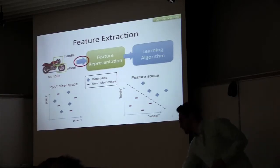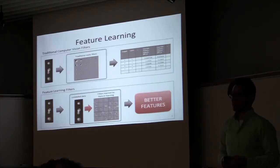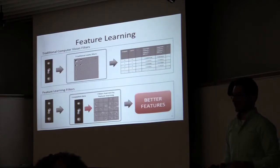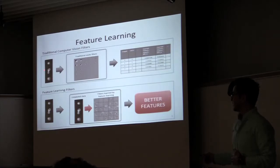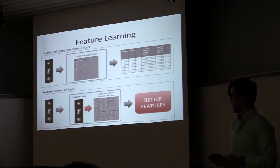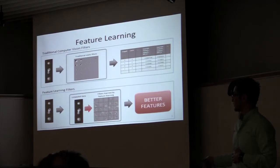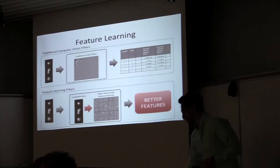Traditionally, people have used static computer vision-based feature detectors — filters based on texture or shape — that transform original images into large datasets which typically need to be filtered to find relevant features. Recently, machine learning algorithms have advanced this process by using the actual data to learn proper feature representations. You can take labeled or unlabeled data, learn much more descriptive features, and then apply these to the original images to get better features for further classification and clustering.